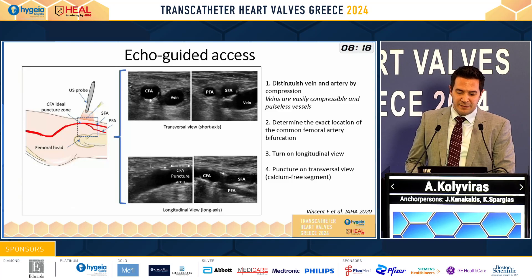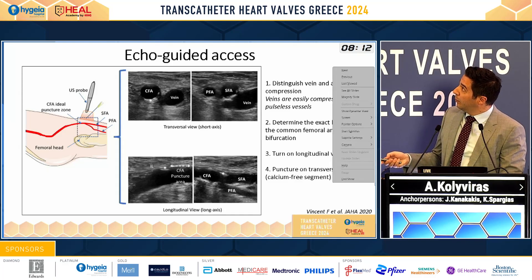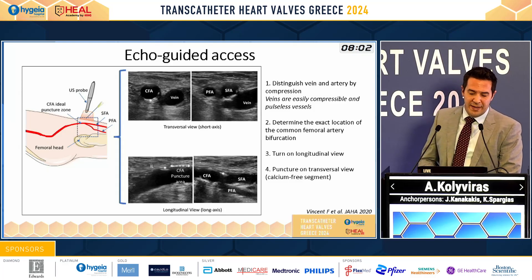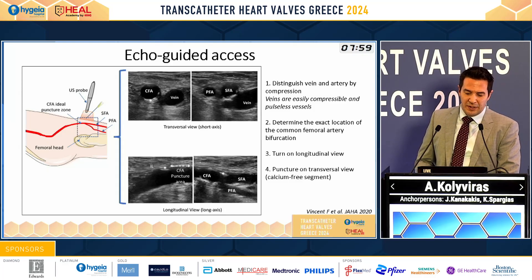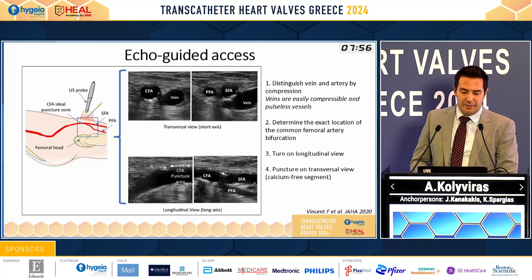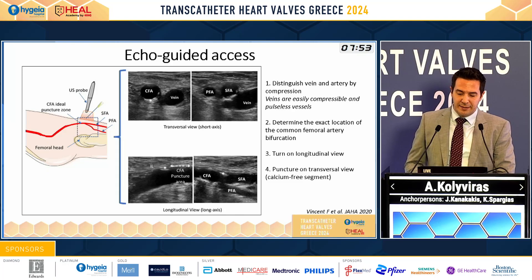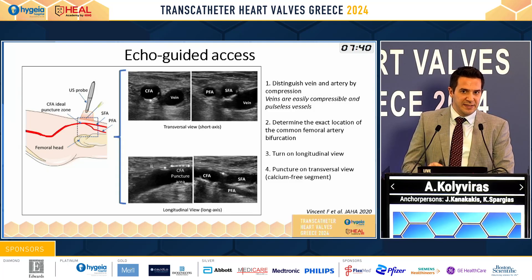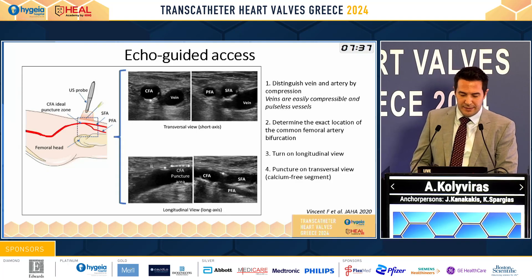Let's start with the echo-guided access. First of all, we have to distinguish the artery from the vein. By compression with the probe, veins are more compressible. We go down with the probe to determine the profunda and the superficial artery in order to locate the exact bifurcation of the common femoral artery. We turn the probe to the longitudinal view and search for the perfect target zone. The perfect puncture should be at the superficial side of the vessel, and we have to avoid the zone where the vessel dives into the body.